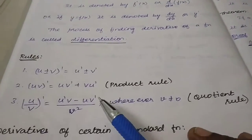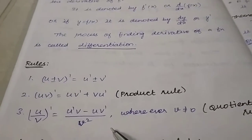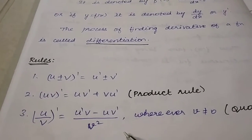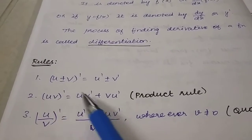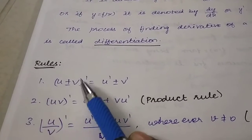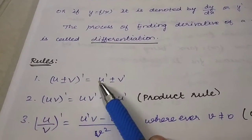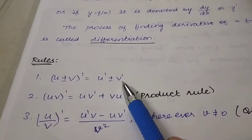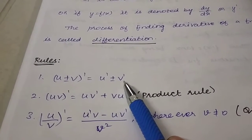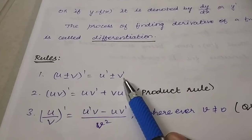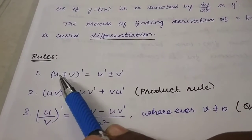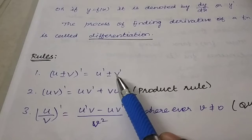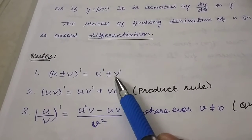Here we have three important results to use when finding derivatives. The first is: (u ± v)' = u' ± v'. So if you are asked to find the derivative of a sum or difference, you simply find the derivatives of each part separately.